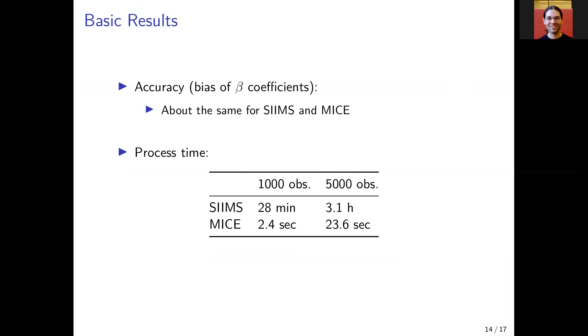Here the accuracy, for example, which is the bias of the beta coefficients, we see that SIMS and MICE have about the same magnitude of bias.